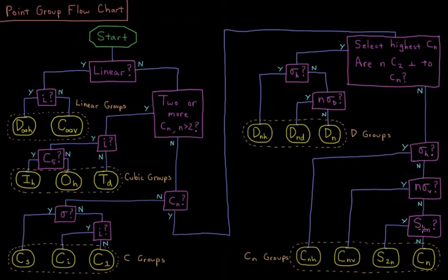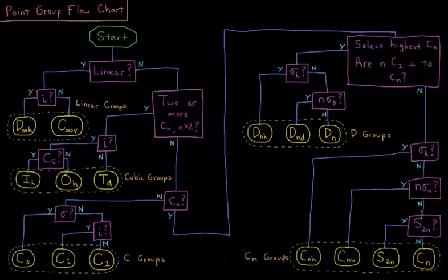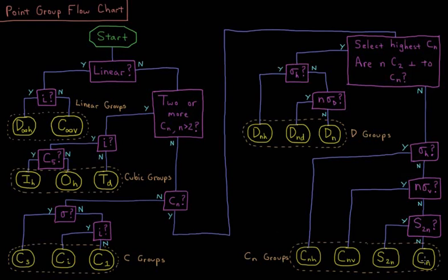If no, we ask ourselves, are there, for our principal axis, Cn, are there S2n axes? If yes, then it's an S2n. If no, then it's just going to be Cn.